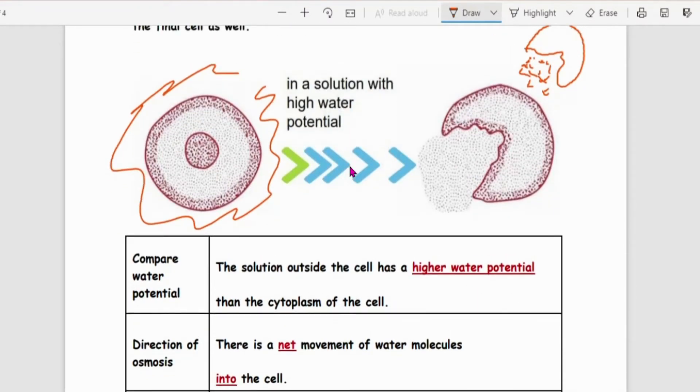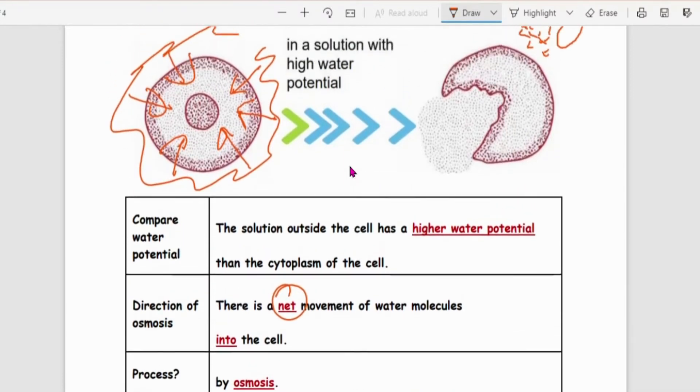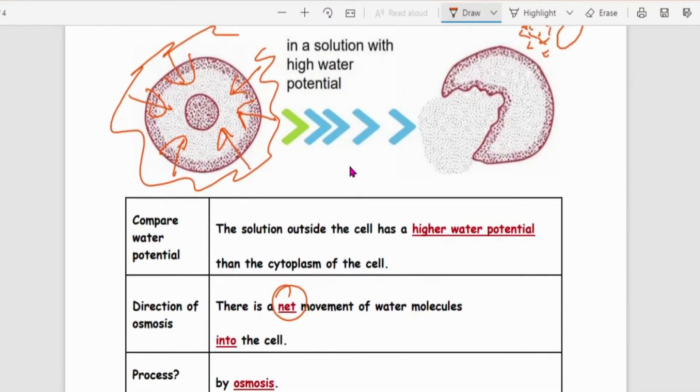Next thing, because outside is higher, water molecules will move into the cell. Water molecules will move into the cell. Now do take note of the word net here. So most people always forget the word net movement. Then what is this process? Because it's a movement of water, so it's osmosis.